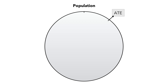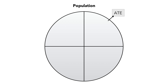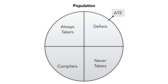We're going to split this population into four groups: the compliers over here, the always takers up here, the never takers down here, and the defiers up here. The local average treatment effect is just the average unit level causal effect for everybody in this portion, which gives us the local average treatment effect.